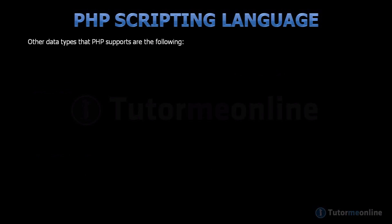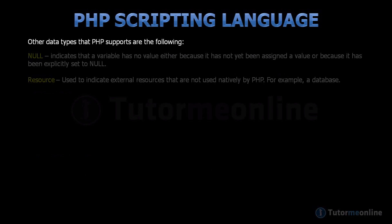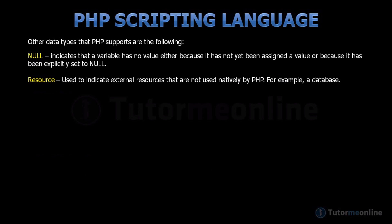Other data types that PHP supports: Null, which indicates that a variable has no value, either because it has not yet been assigned a value, or because it has been explicitly set to null. And a resource, which is used to indicate external resources that are not used natively by PHP — for example, an external database.